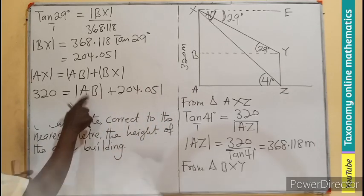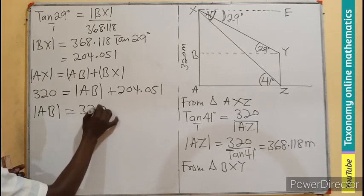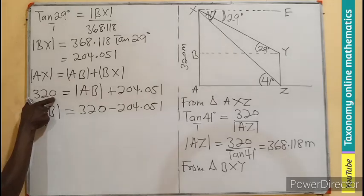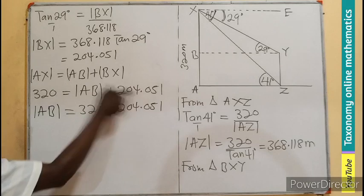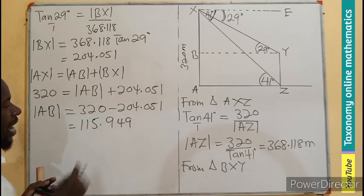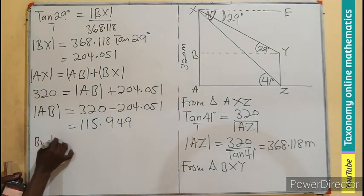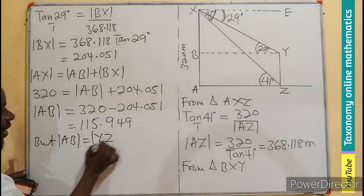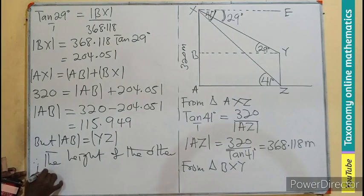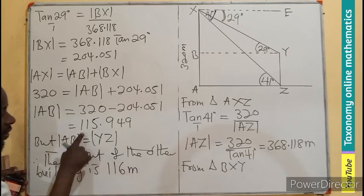We subtract to get the value of AB. So AB equals 320 minus 204.051, which produces 115.949. The question asks for the nearest meter, and we know AB is the same as YZ. Therefore, the height of the other building is 116 meters, approximated to the nearest whole number.